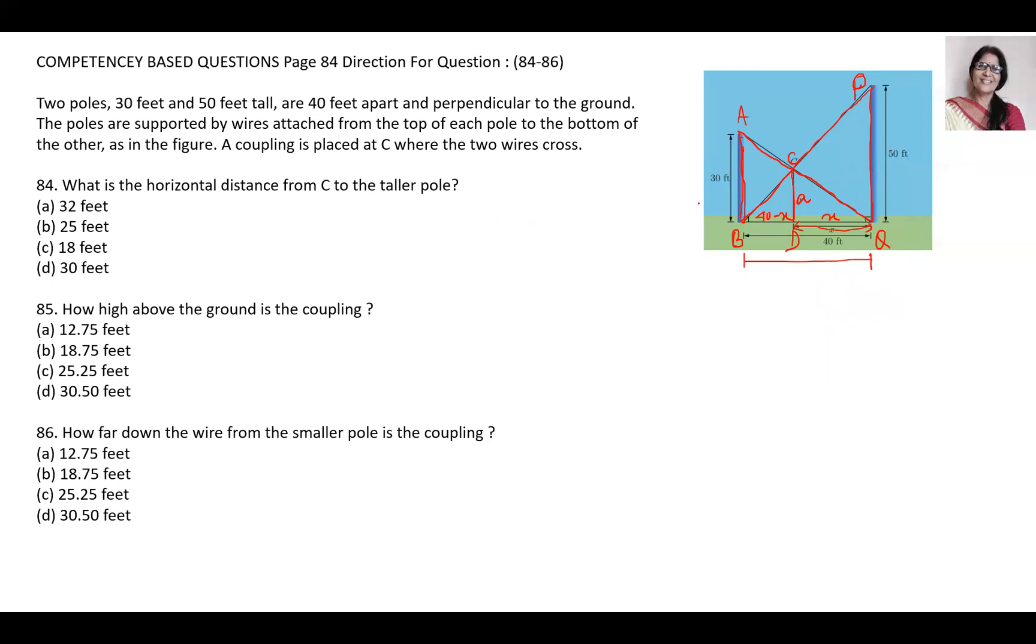Using similarity in this figure. For question number one, the question is what is the horizontal distance from C to the taller pole. So 30 feet and 50 feet tall, 40 feet apart, and the coupling is placed at C. The question is about the distance DQ, which we are taking as x.